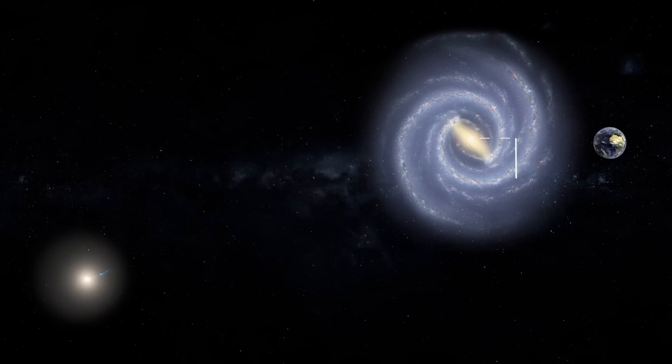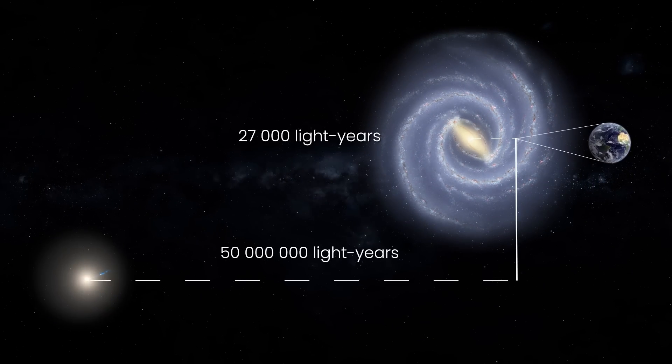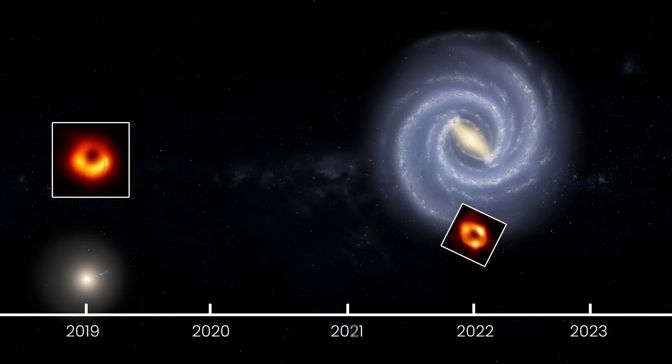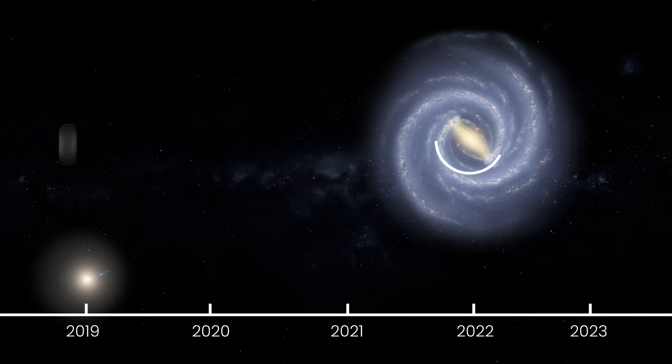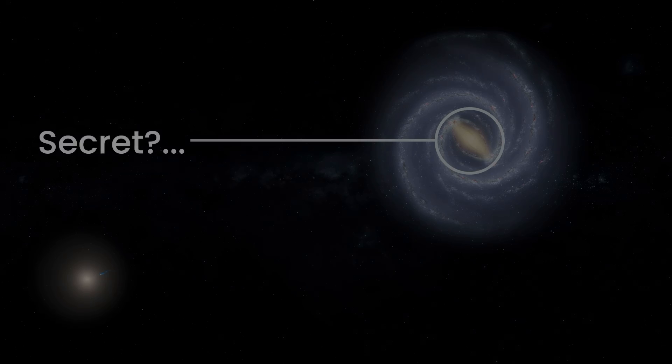But Messier 87 is much further, about 50 million light years away. So why was the image of Sagittarius A-star taken much later, and why was it so difficult to do? What secrets does this space region hide from us?